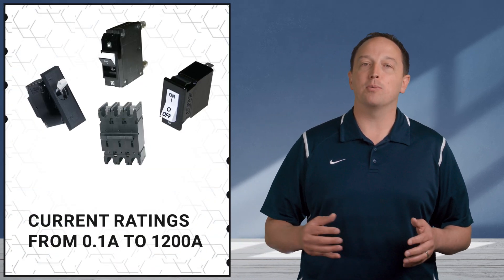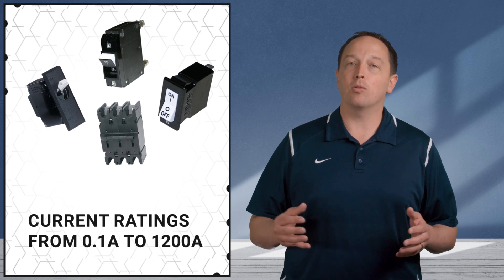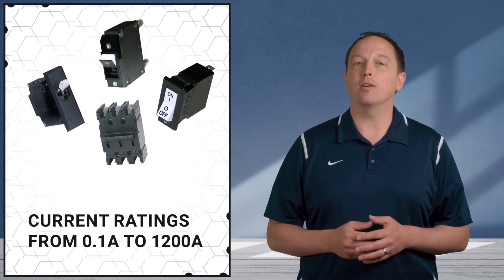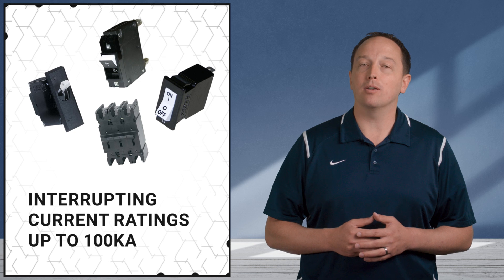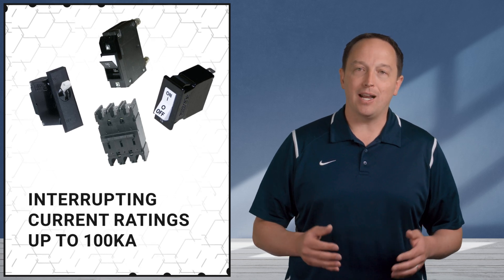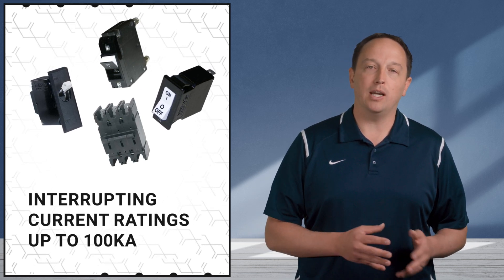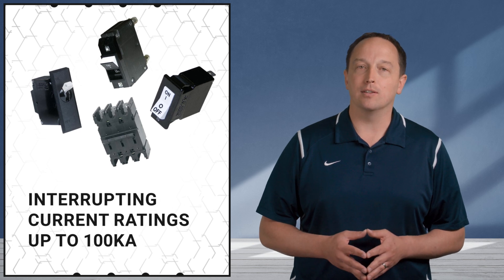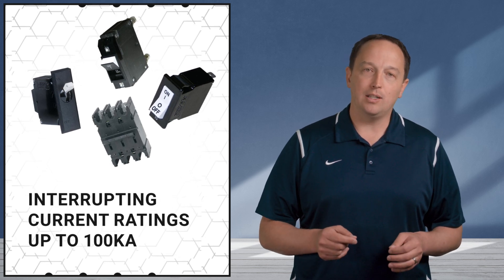These range from compact panel mount configurations to F-frame styles for up to six poles, with current ratings from one-tenth of an amp to 1200 amps, and interrupting current ratings up to 100,000 amps. They provide a consistent trip point over temperatures from negative 40 to positive 85 degrees Celsius and can be fine-tuned to one-tenth of an amp.